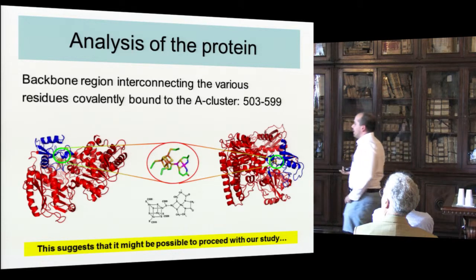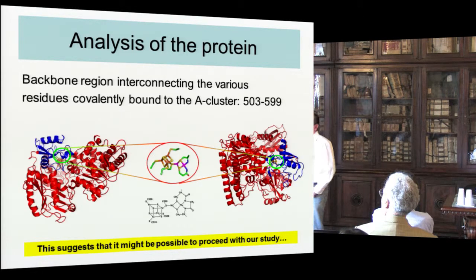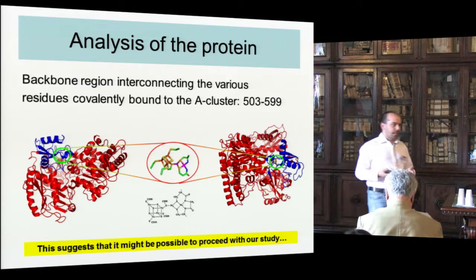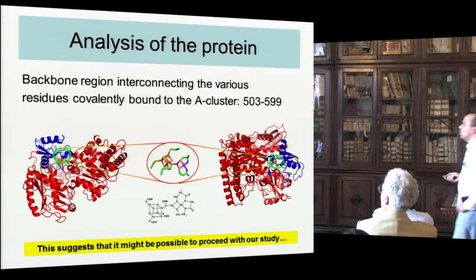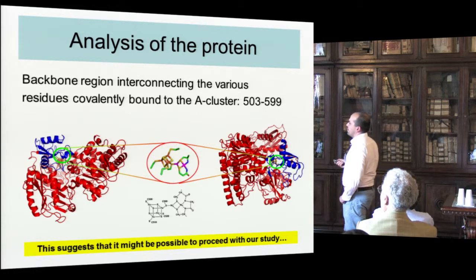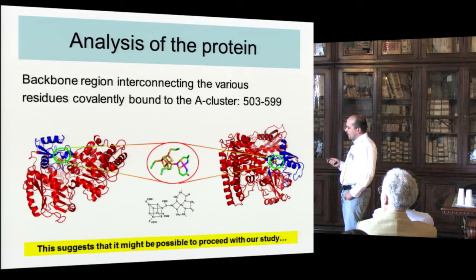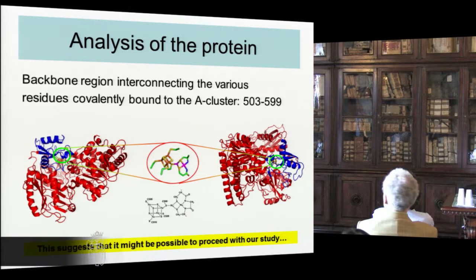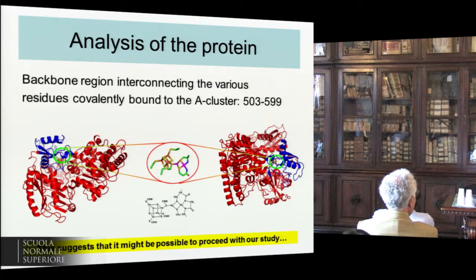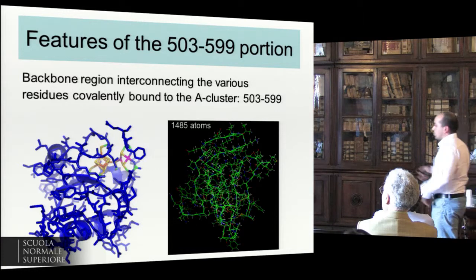Basically, we need to produce a DFT model large enough to reproduce the constraints imposed by the protein matrix on the A-cluster, but small enough to allow DFT calculations to proceed on current computers. The first thing to do was to analyze the protein that harbors the A-cluster in more detail. All the residues covalently linked to the A-cluster — four cysteines around the iron-4S4 cluster, two cysteines at the dinickel cluster, and also a glycine — are all connected along the backbone in one compact blue area. This suggests we might start cutting our system to see what happens in terms of size.